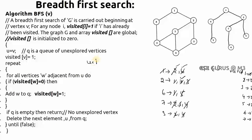Now we repeat: for all vertices W adjacent from U (U is currently 1), the adjacents are 2 and 6. We check — state of 2 is 0 and state of 6 is 0 — so we add both W values (2 and 6) to the queue Q and set state of W equal to 1 for both.